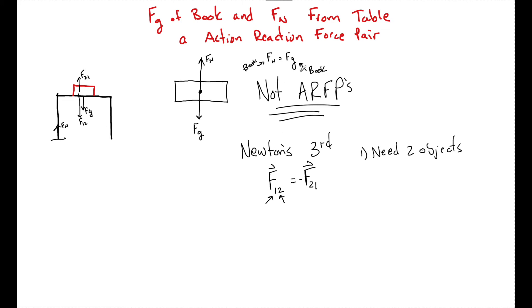But the simple answer, FN and FG are not an action-reaction pair because they act on only one object where an action-reaction pair needs two objects, a pair of objects, object one and object two.